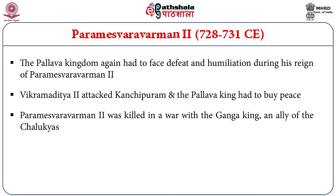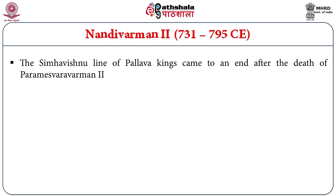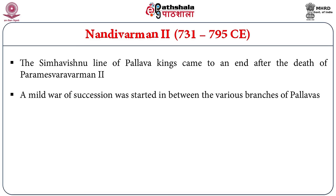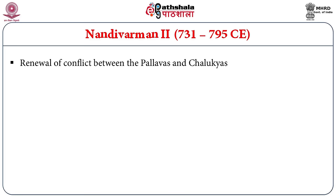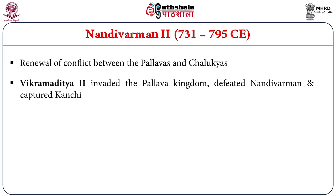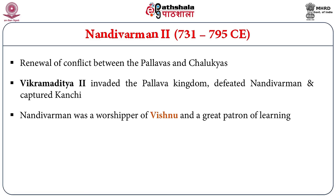After Narsimha Varman II, Paramahaswara Varman II ruled between 728 to 731 AD. Again, the Pallava kingdom had to face defeat and humiliation. Vikramaditya II attacked Kanchipuram and the Pallava king had to buy peace once again. Paramahaswara Varman II was later killed in a war with the Ganga king, an ally of the Chalukyas. With his death, the Simha Vishnu line of Pallava kings came to an end. After his death, a mild war of succession started among various branches of the Pallavas. Nandivarman Pallavamalla, who belonged to a collateral branch of the Pallavas, became the king. During his time also, Vikramaditya II invaded the Pallava kingdom, defeated Nandivarman, and captured Kanchi once again. Since the time of Simha Vishnu, the Pallavas had dominated the destinies of South India with Kanchi as their capital.